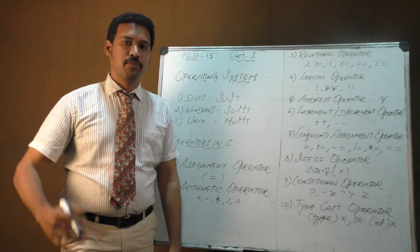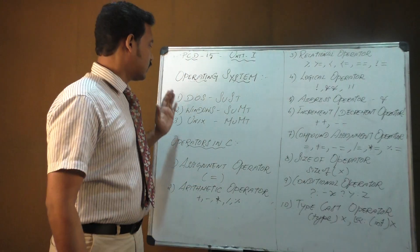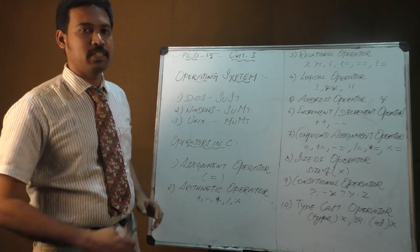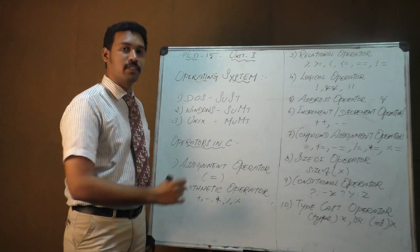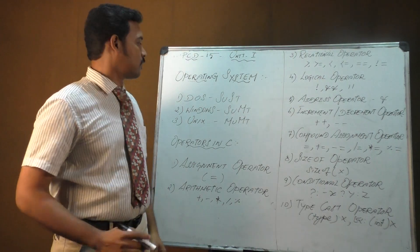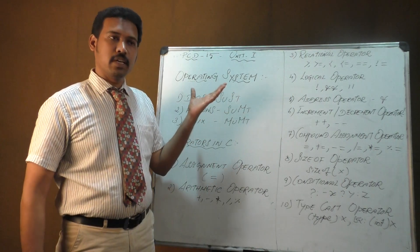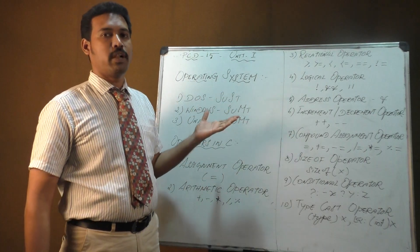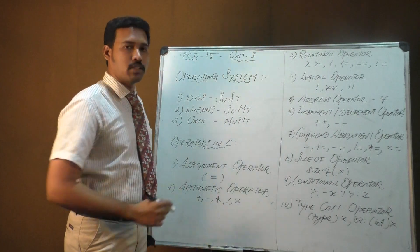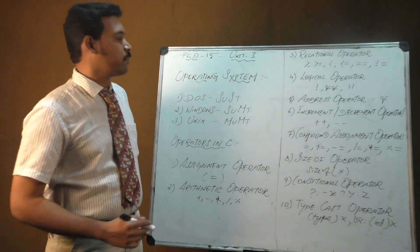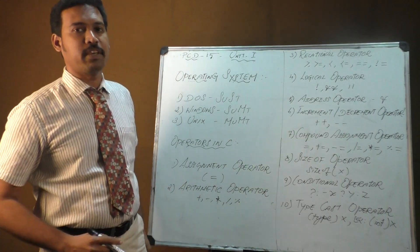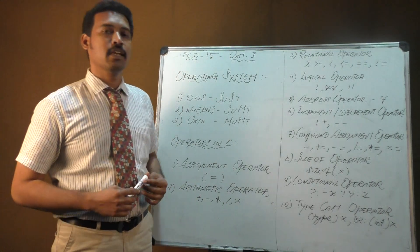There are three major categories of operating systems available: DOS, Windows, and UNIX. DOS stands for Disk Operating System. It is very good for character user interface, called CUI. The concept behind DOS is single user, single task.